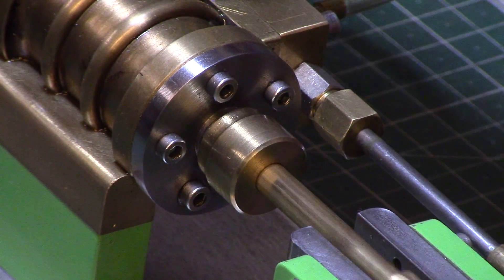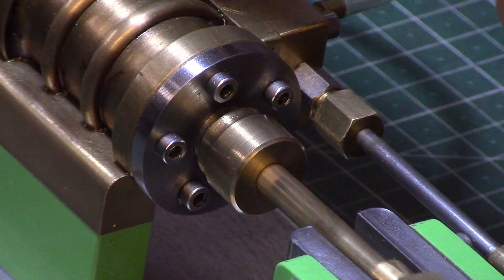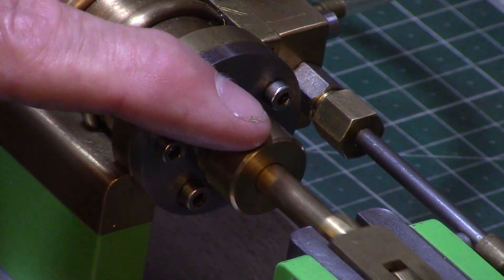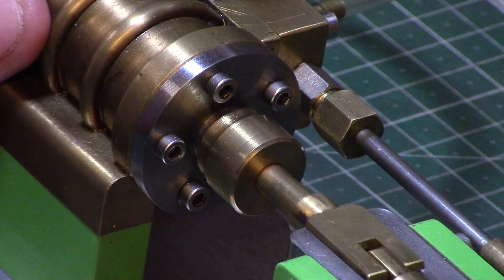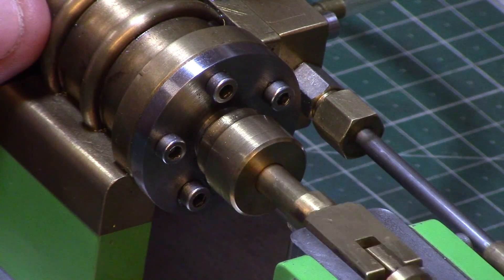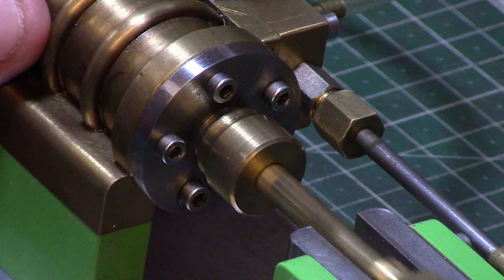The piston rod enters the cylinder through a reamed hole in the cylinder cover which also has a compression gland fitted with a graphite coated yarn to help it seal, yet still allowing for free movement of the piston rod into the cylinder.